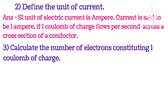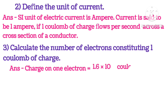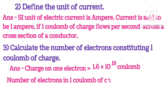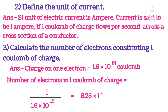Calculate the number of electrons constituting 1 coulomb of charge. The charge on 1 electron is 1.6 × 10⁻¹⁹ coulombs. Therefore, the number of electrons in 1 coulomb will be 1 divided by 1.6 × 10⁻¹⁹, that is 6.25 × 10¹⁸ electrons.